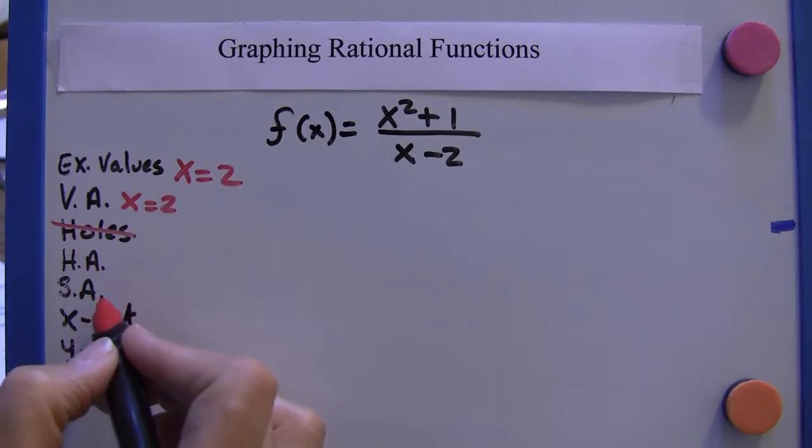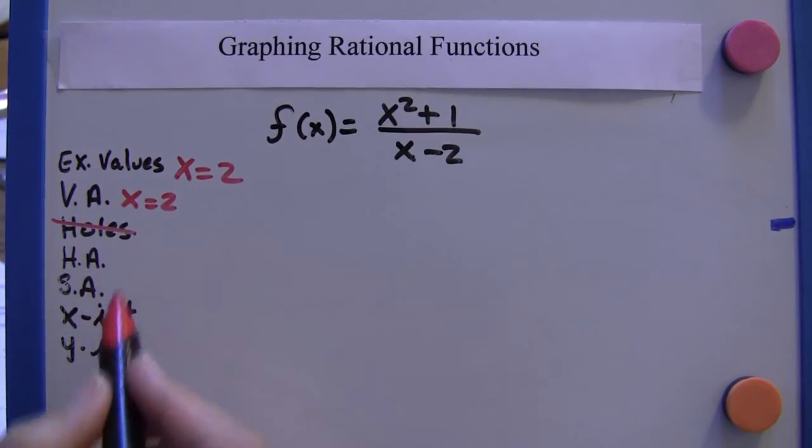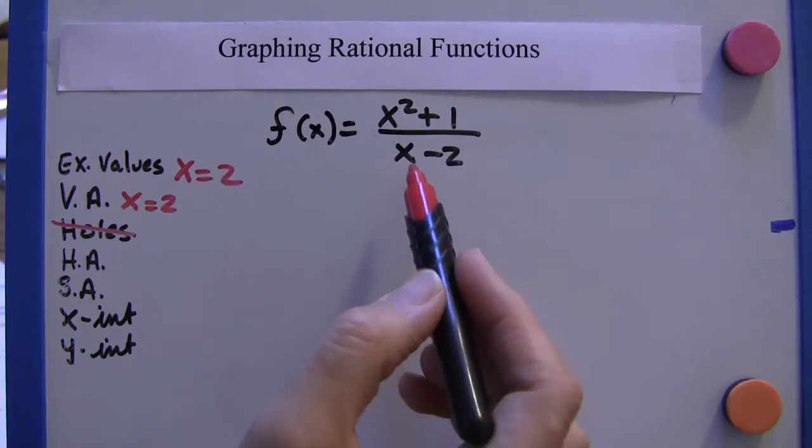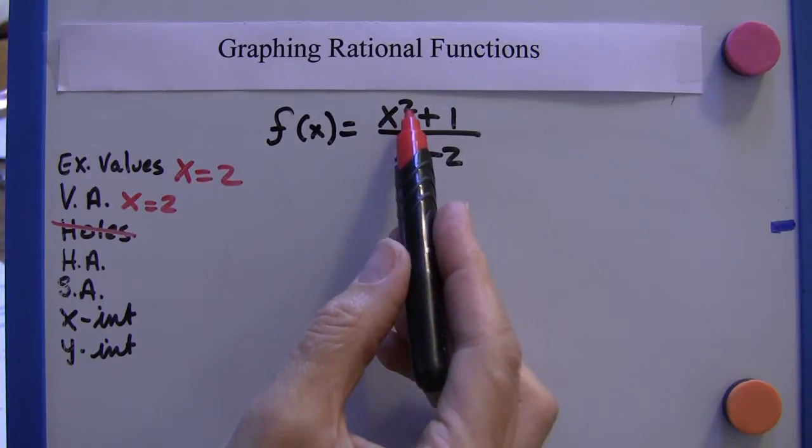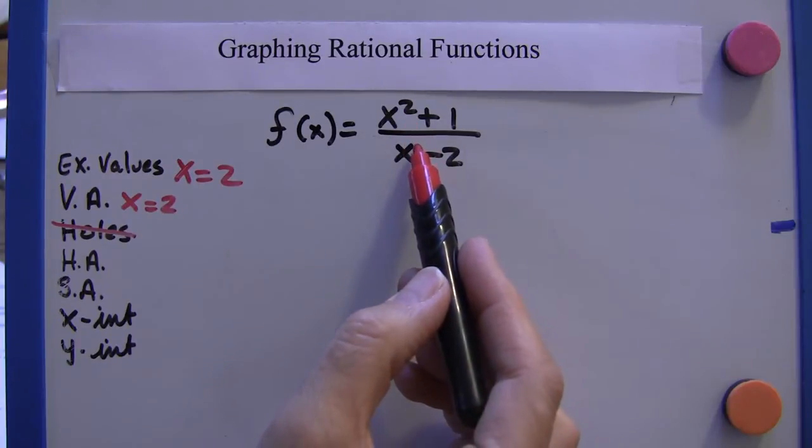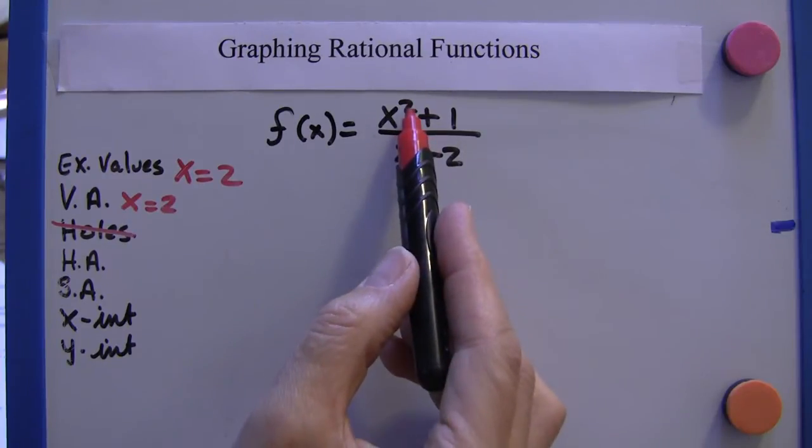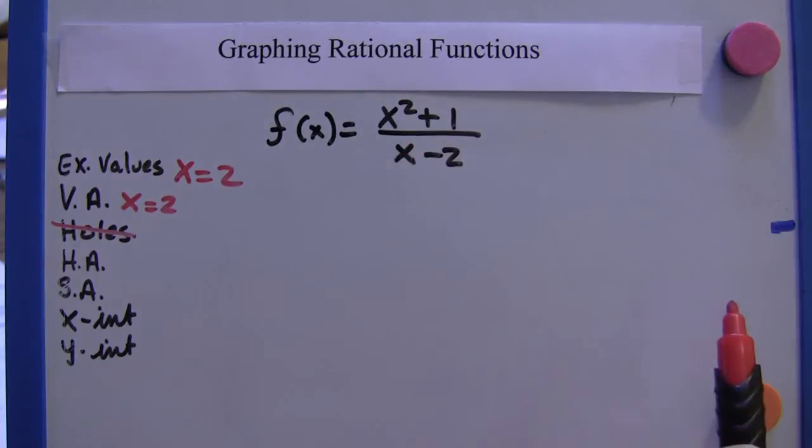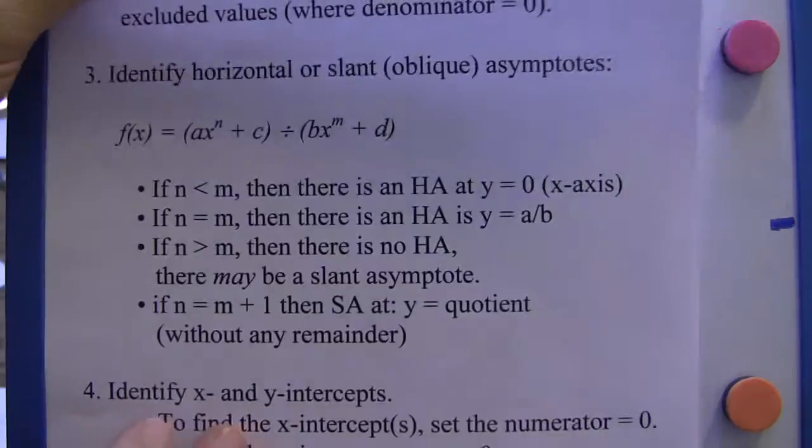Horizontal asymptote or slant asymptote: we want to pay attention to the exponents, the leading exponents in the numerator and denominator. The leading one in the numerator is two, the one in the denominator is one. So the numerator is greater than the denominator by one, and that happens to fit this situation here.